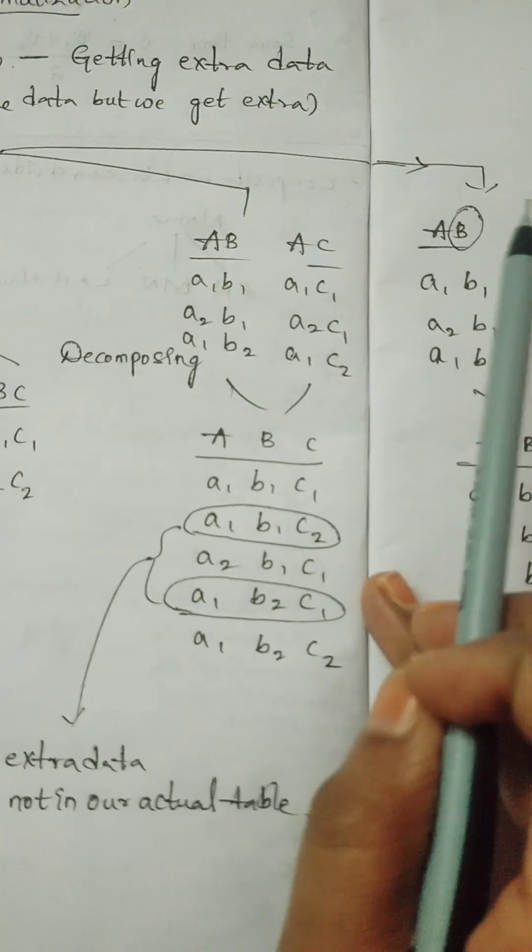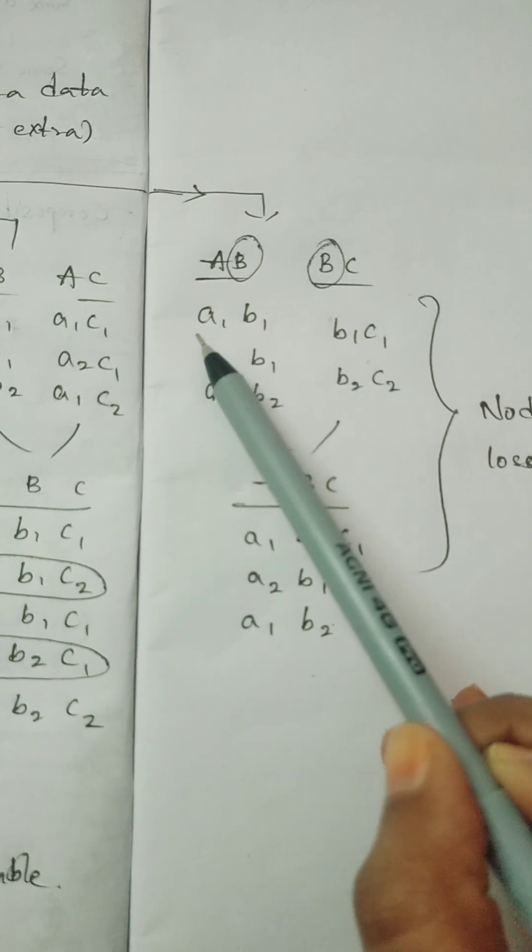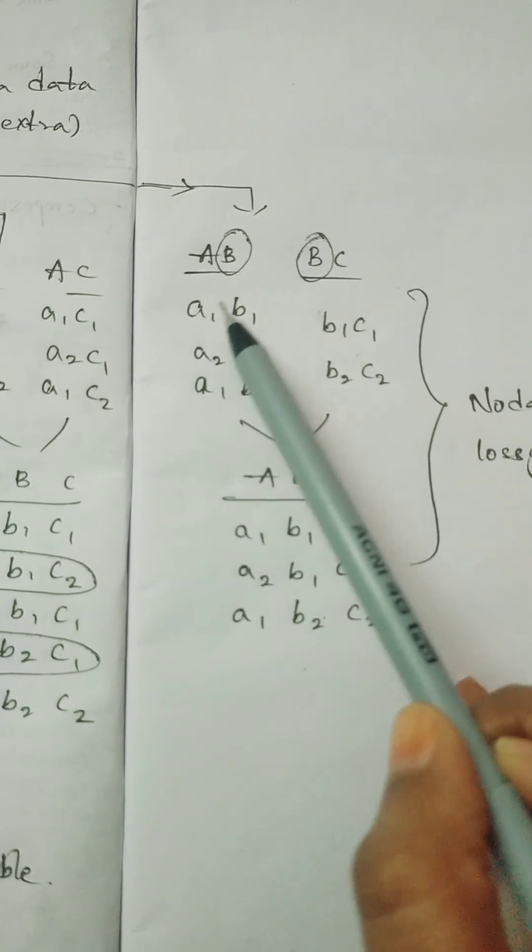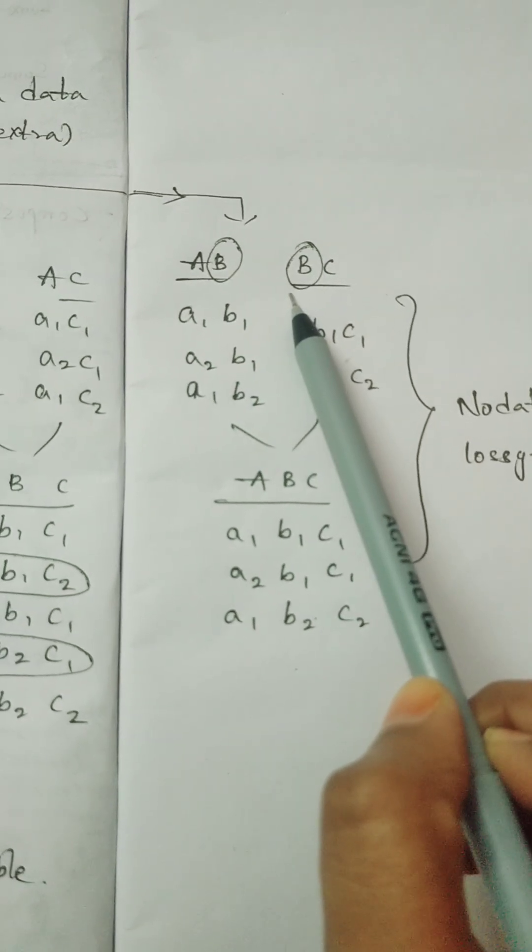Suppose we have the same candidate attribute. Whenever we divide the data set into two decompositions like AB and BC. See here we have B is common in both attributes.